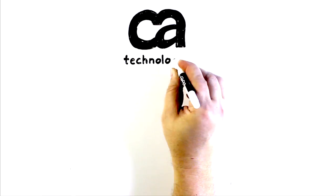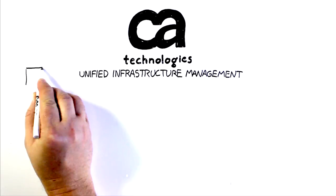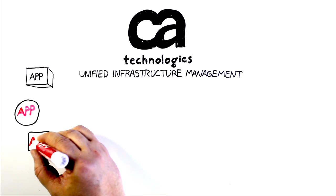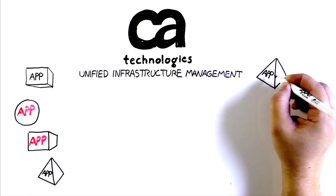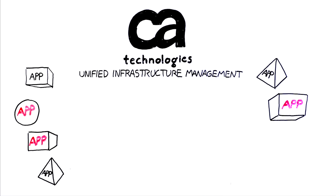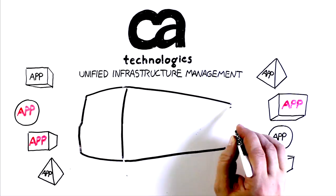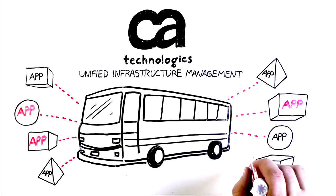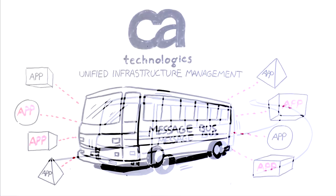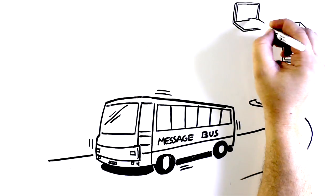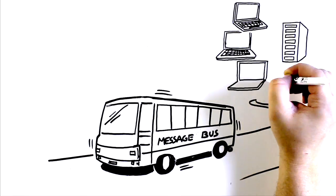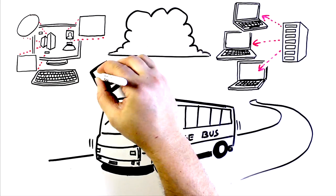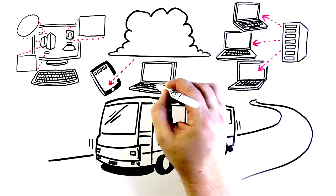That's where CA Unified Infrastructure Management comes in. Formerly CA Nimsoft Monitor, UIM was developed from the ground up, based on a library of APIs written on an Internet-era message bus technology. This architecture was ahead of its time, and it's perfect for today's era of distributed computing, virtualized environments, and public and private cloud infrastructures.